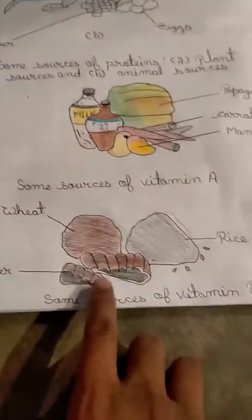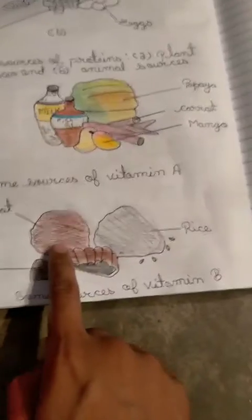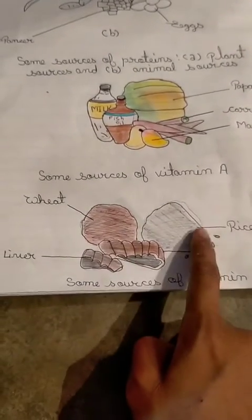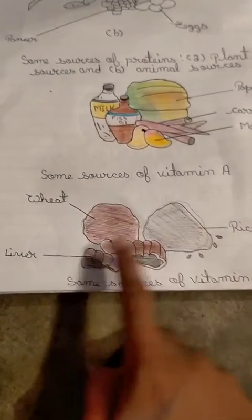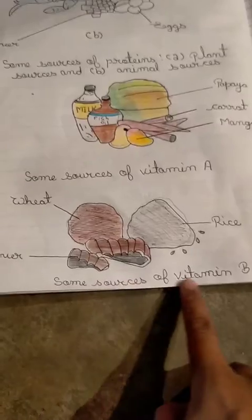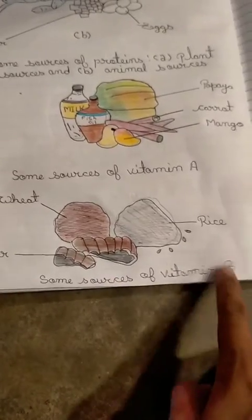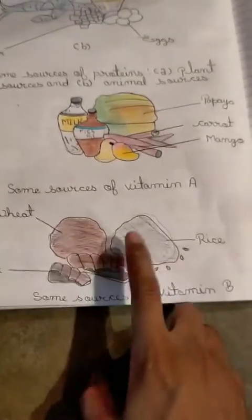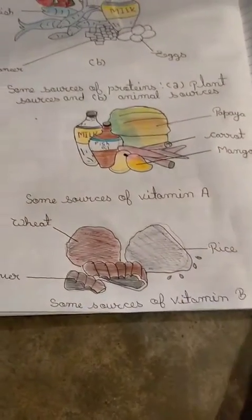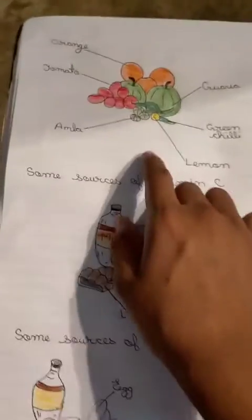Friends, this is wheat (gehu), rice (chaval), and fish liver. These are some sources of Vitamin B — if our body gets these, we get Vitamin B.